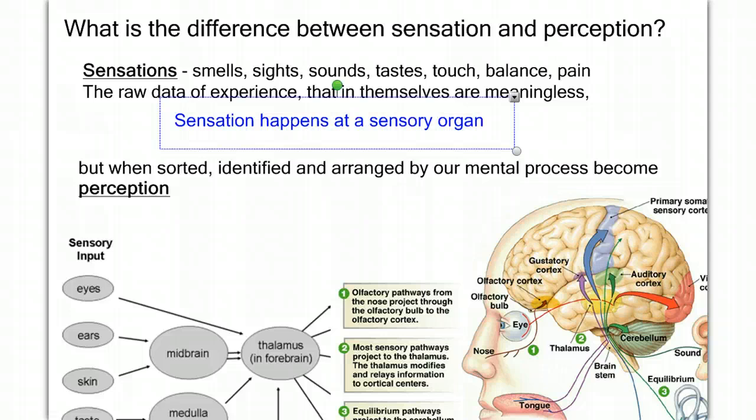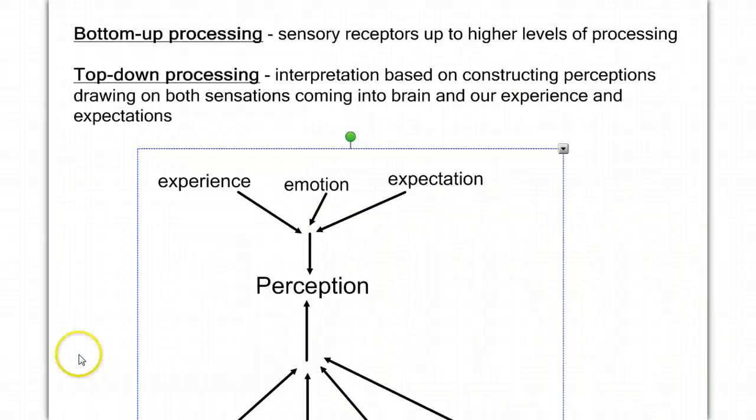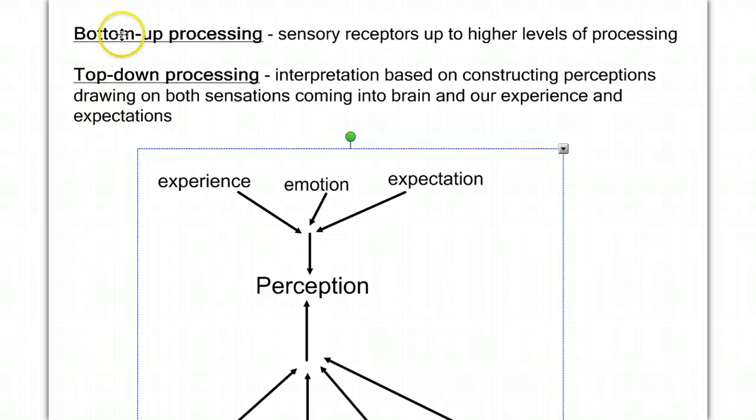So our first big concept is that sensations happen at sensory organs and perception happens in the brain. Now when it comes to processing information, we can think of this in two different ways. When we think about bottom-up processing, we're talking about information from sensory receptors coming in and going up to higher levels of processing. Contrast that with top-down processing, where our interpretation is based on constructing perceptions drawn on both sensations coming into the brain and our experience and expectations.